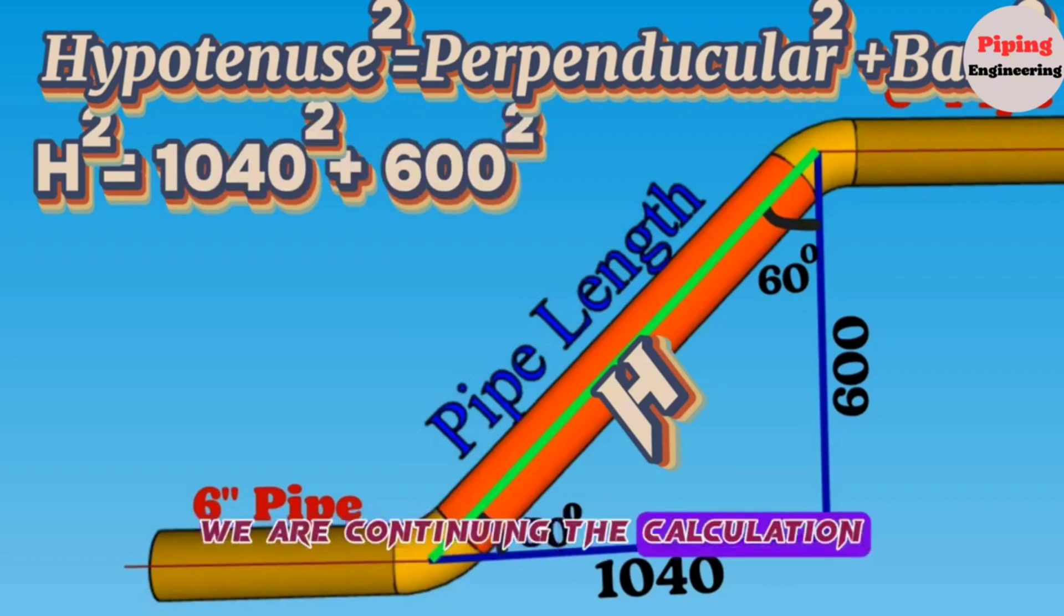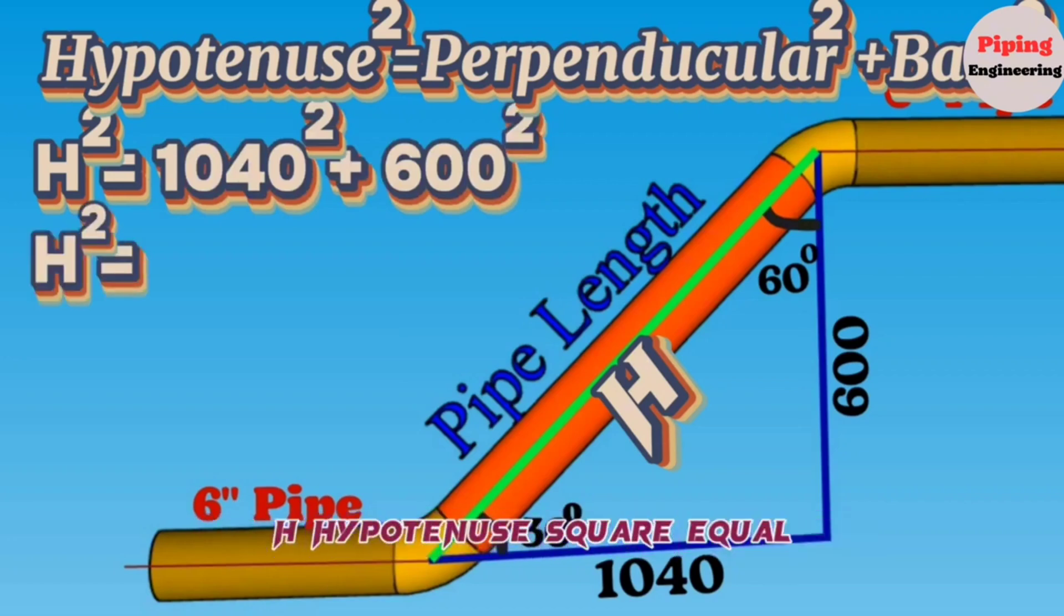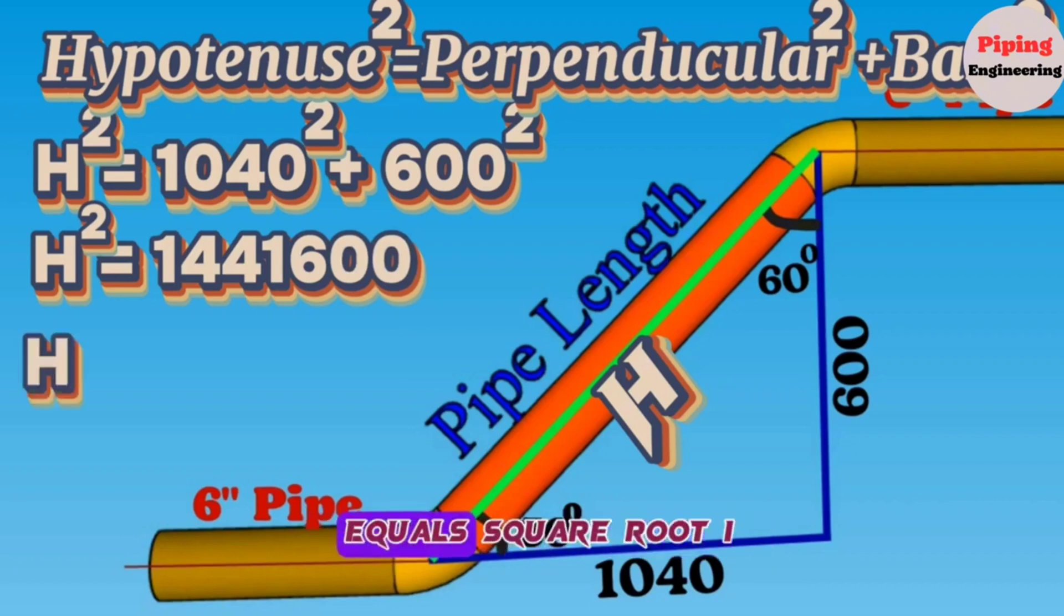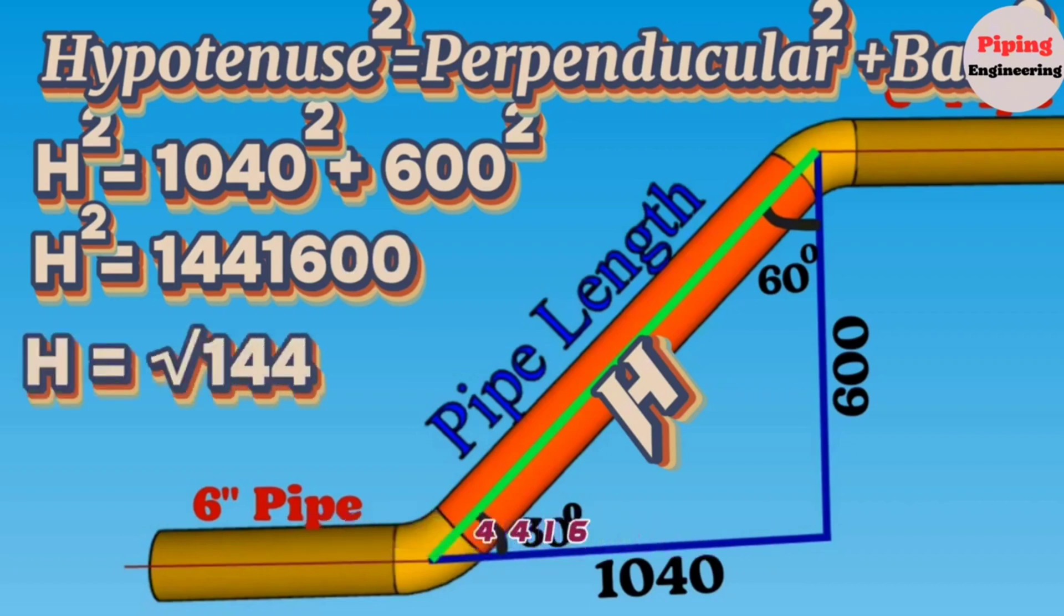Continuing the calculation, H hypotenuse squared equals 1441600. Continuing again, we found H hypotenuse equals square root of 1441600.